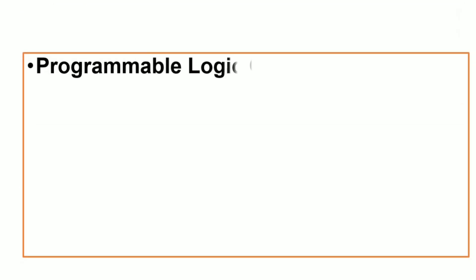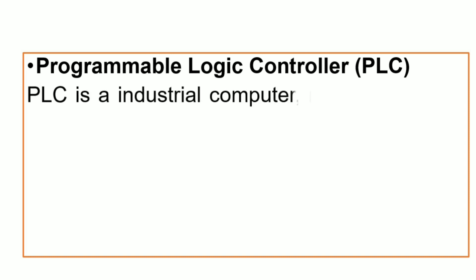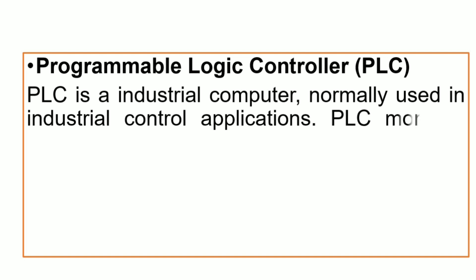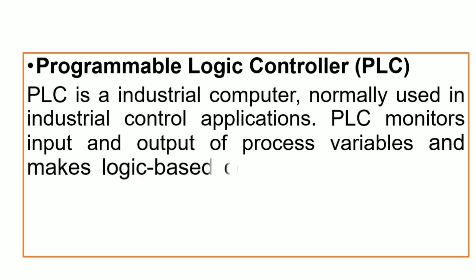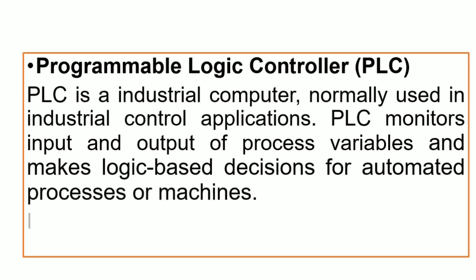What is PLC? PLC is an industrial computer normally used in industrial control applications. PLC monitors the input and output of process variables and makes logic-based decisions for automated process machines. It uses ladder logic diagram.